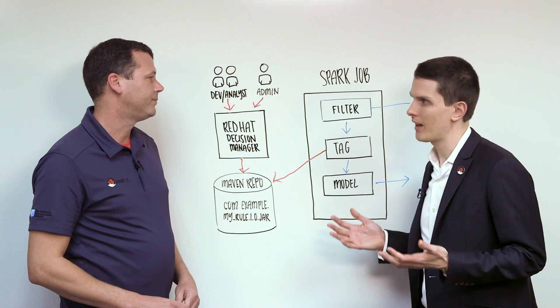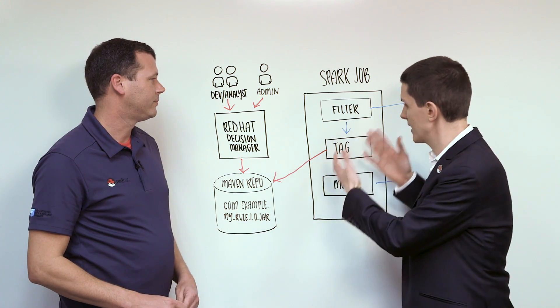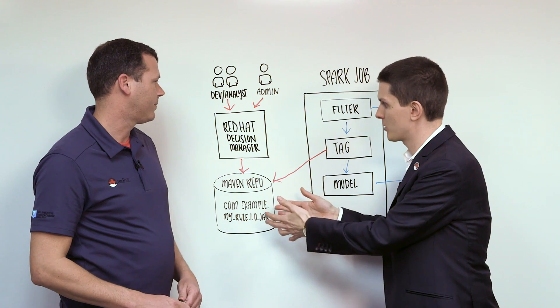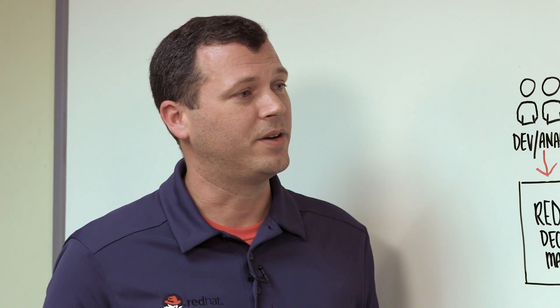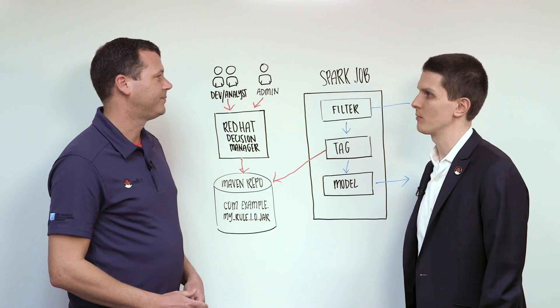So am I going to be writing like thousands of lines of code to be able to actually integrate my Spark job into my Maven repository to pull those rules down? No. It's about 10 lines of code. So you could show us right now? Definitely. All right. Let's make some room.